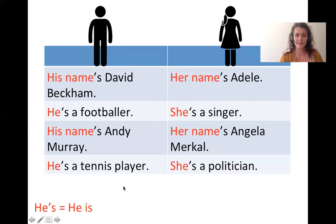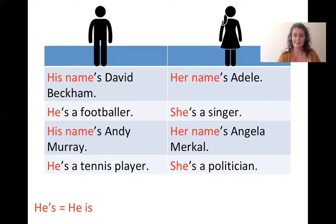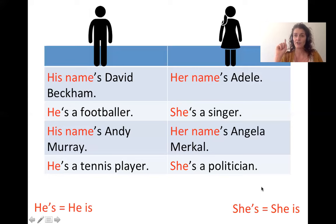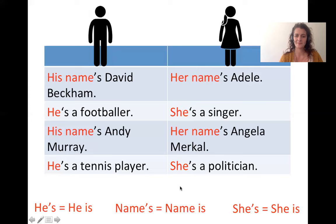Things to notice: he's is the contraction of he is. She's is the contraction of she is. Name's is the contraction of name is.